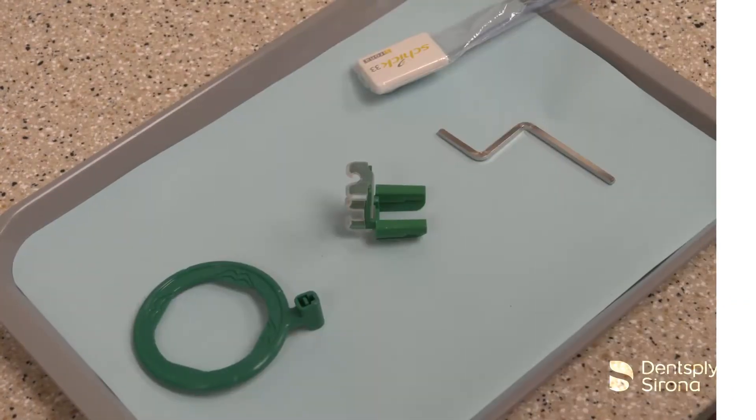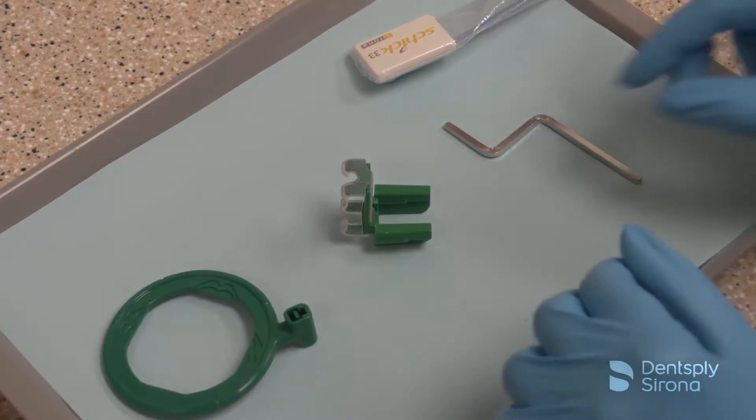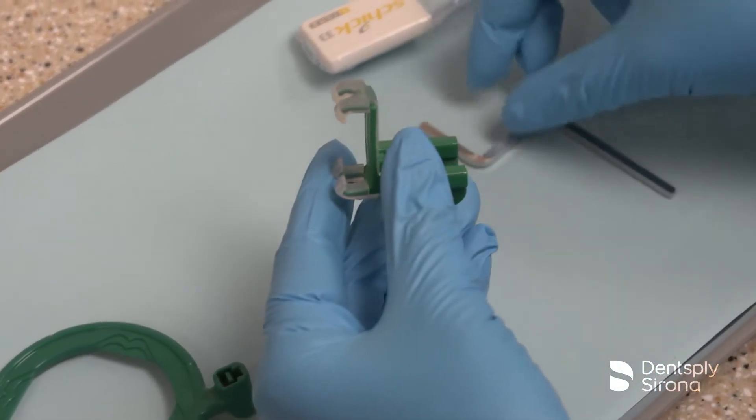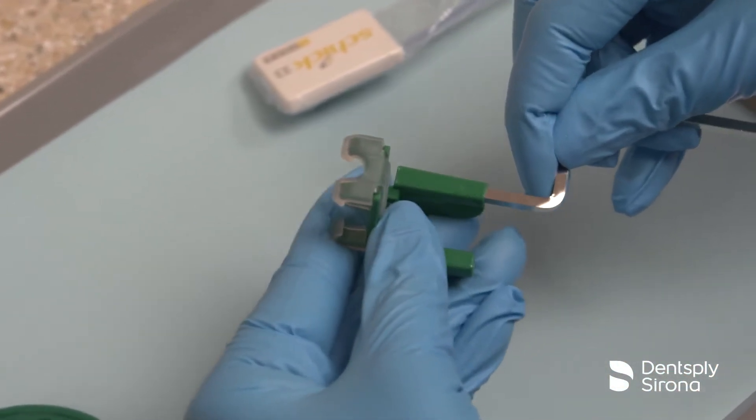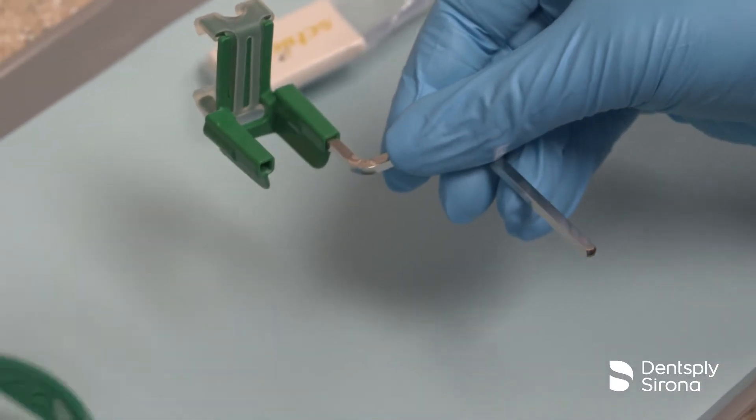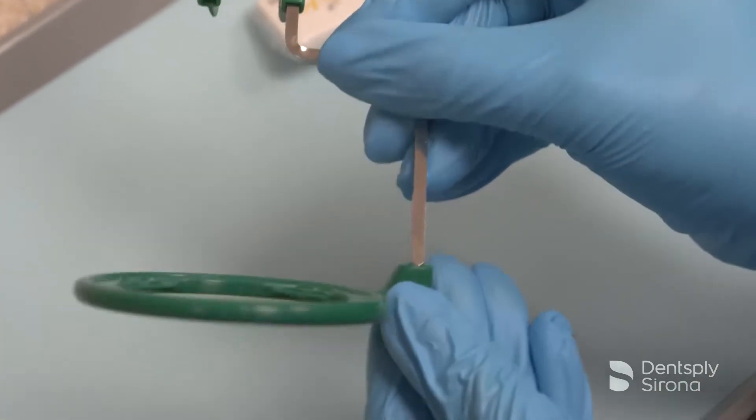To assemble the XCP short arm with the XCP-DS-FIT endo bite block for endodontic images, place the metal arm into the front tab of the green bite block. Slide the arm into the green aiming ring.